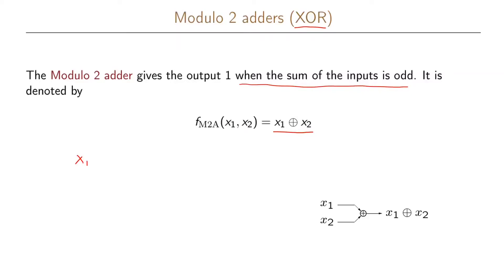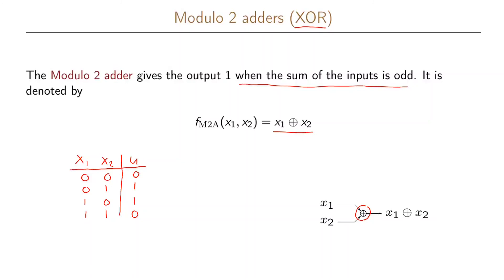Looking at the truth table for this function, we have x1 and x2 as input and enumerate the different possible inputs. According to the definition, when the sum of the inputs is odd it gives a 1 as output. So the rows 0-1 and 1-0 give a 1 output; for 0-0 the sum is 0, and for 1-1 the sum is 2, both even, so they output 0. We write this using this symbol, and x1 XOR x2 is written like this.